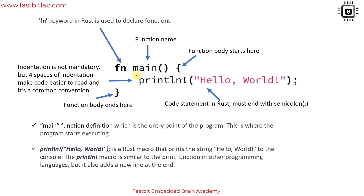Let's go through the components of this code. The 'fn' keyword is used to declare functions in Rust. 'main' is the function name, which always comes with parentheses to mention arguments — currently there are no arguments, so empty parentheses. After that, a curly brace marks the start of the function body.